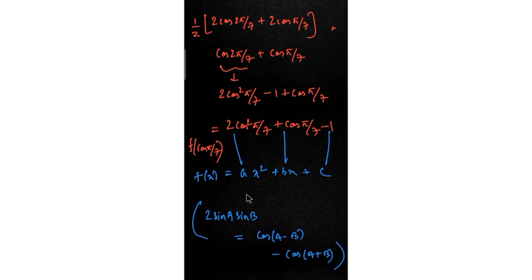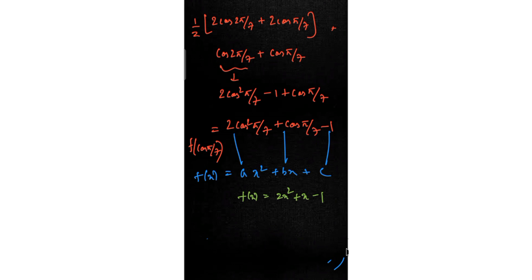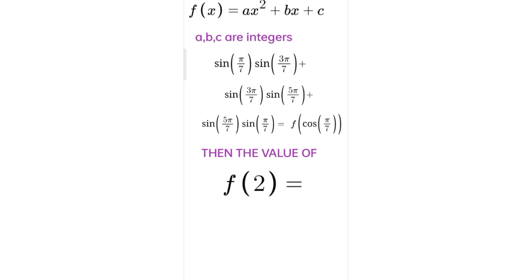So our quadratic equation is f(x) = 2x² + x − 1. Therefore f(2) = 2(2)² + 2 − 1 = 2(4) + 2 − 1 = 8 + 2 − 1 = 9. The answer is f(2) = 9. This is a fantastic problem where excellent logic — specifically converting the trig expression into a polynomial in cos(π/7) — is the key to finding the solution. Thanks for watching and stay tuned!